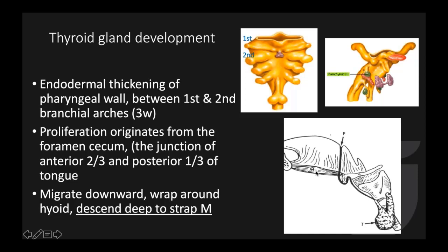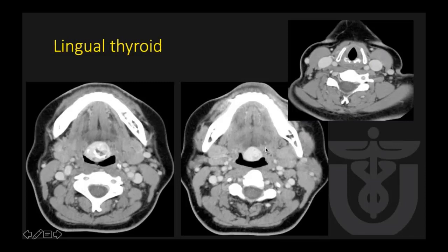The thyroid gland develops as the endodermal thickening of the pharyngeal wall between the first and second branchial arches. The proliferation originated from the area called the foramen cecum, which is the junction of the anterior two-thirds and posterior one-third of the tongue. From there, they migrate downward through the tongue musculature, wrap around the hyoid bone, and descend deep to the strap muscle into the anterior trachea. When the thyroid gland fails to descend, it is called ectopic thyroid. The one sitting at the base of the tongue is called lingual thyroid.